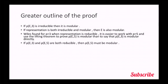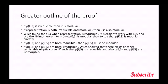If rho e3 and rho e5 are both reducible, then rho e5 must be modular. Now if rho e3 and rho e5 are both irreducible, Wiles showed that there exists another semistable elliptic curve f such that rho f5 is irreducible and also rho e5 and rho f5 are isomorphic. It means that they are more or less the same.